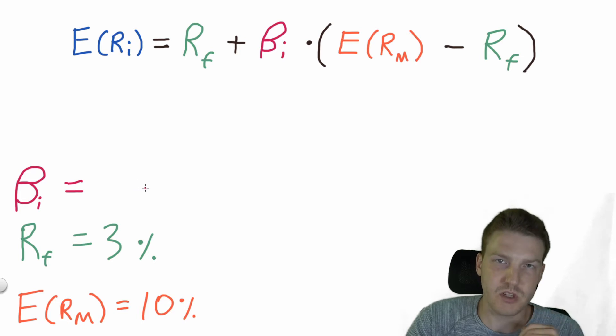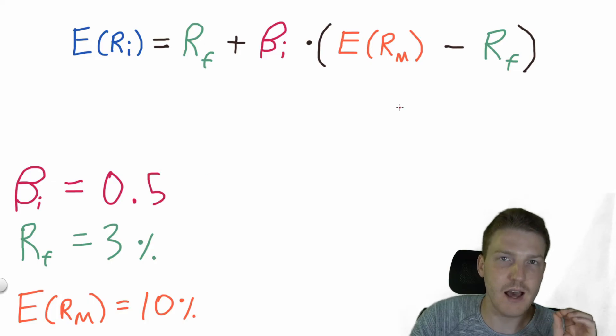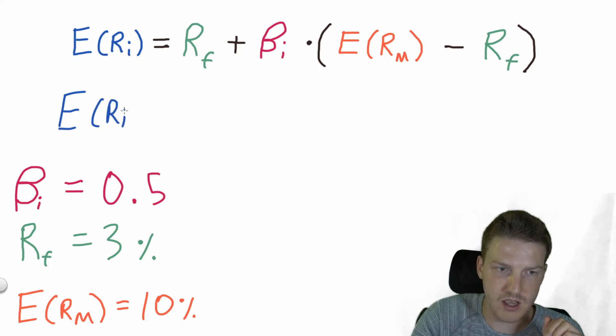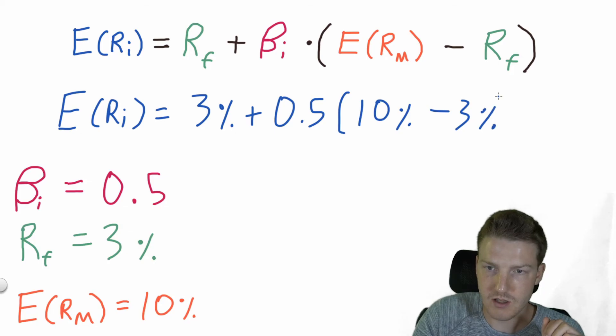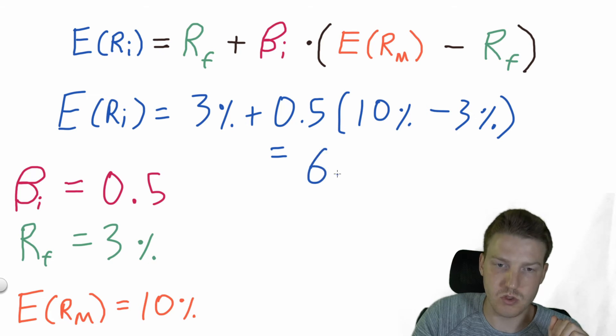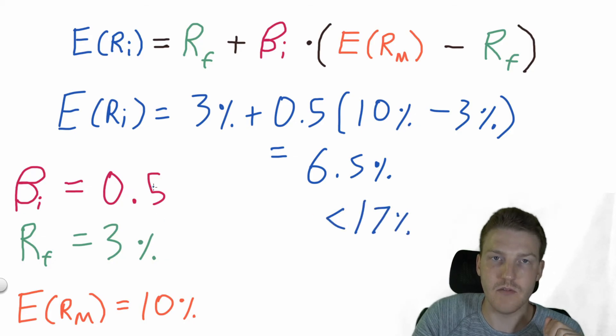Now let's see what happens to our expected return if we use a lower beta. This time we will use a beta of 0.5. So this is not a very risky asset. So our expected return on asset I in this case is still the risk-free rate of 3% plus now we use a beta of 0.5 and we still have the same market risk premium of 10% minus 3%. And this time our expected return of asset I is actually equal to 6.5%, which is far less than the 17% that we got when we had a beta of 2.